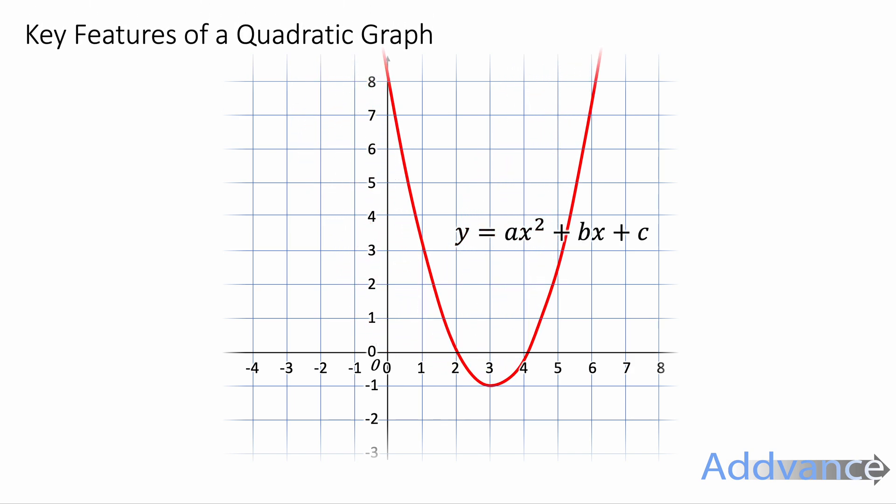A quadratic looks like y equals ax squared plus bx plus c. There's a number in front of the x squared — that's a. There's a number in front of an x term, so there's a number times x. And there's also just a number added on at the end. We call those numbers a, b, and c, and that is the general form of a quadratic equation.